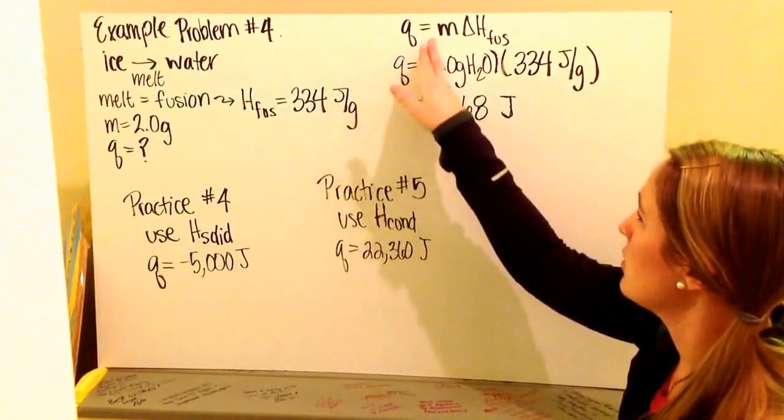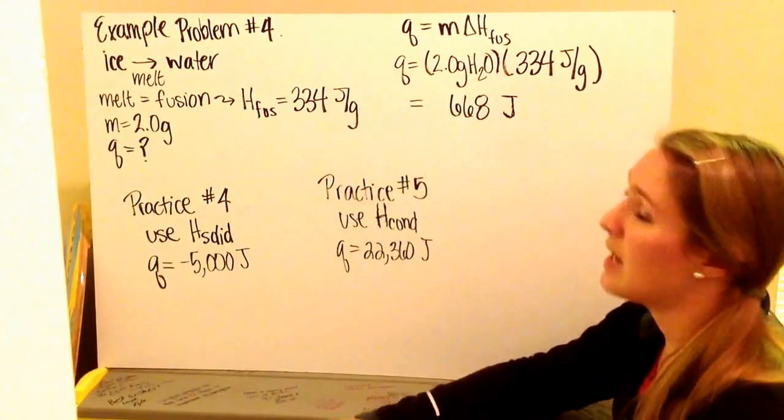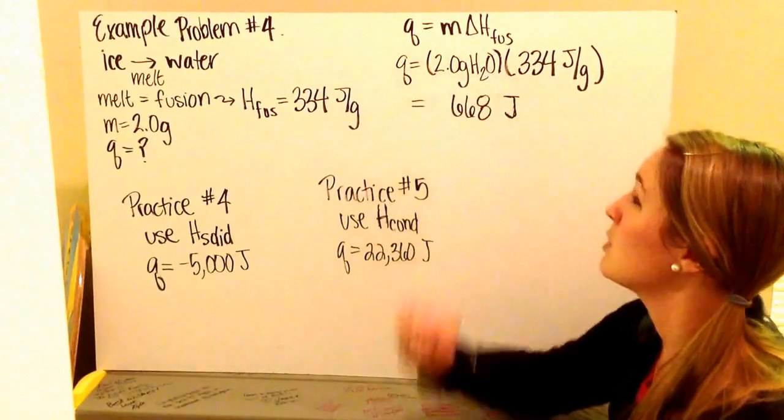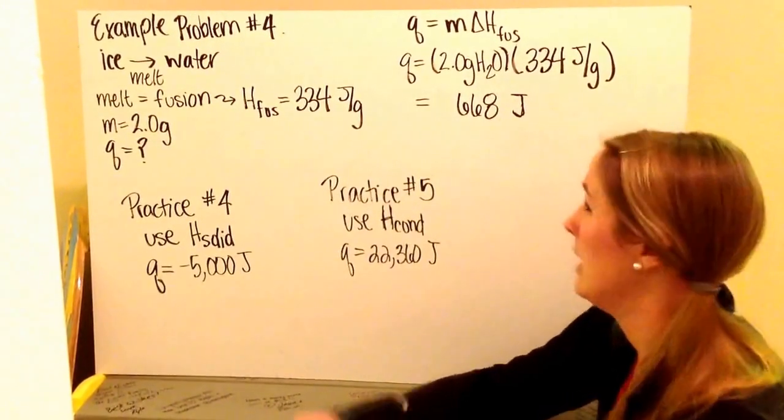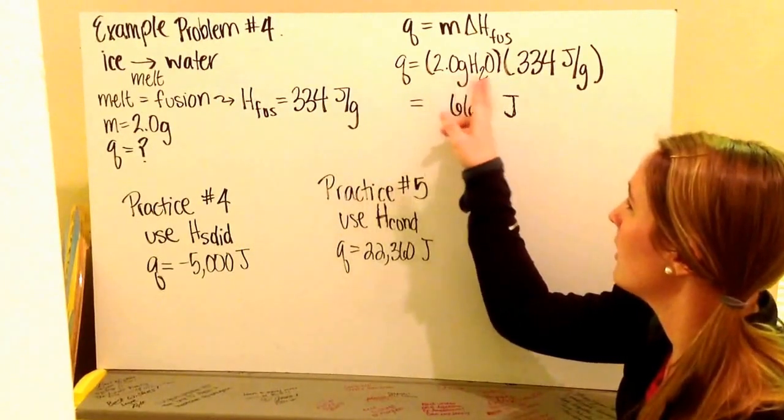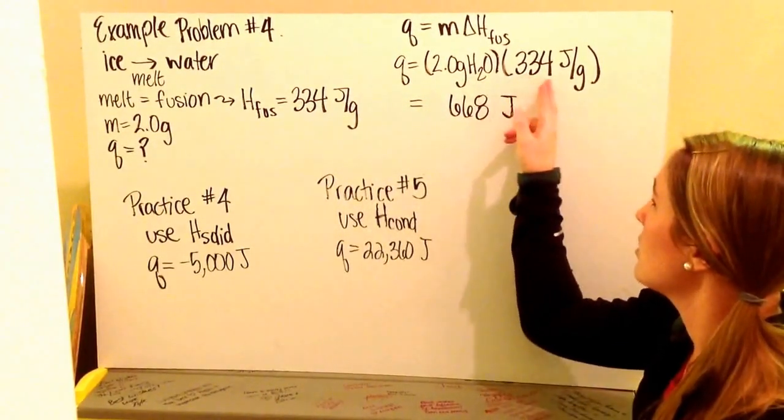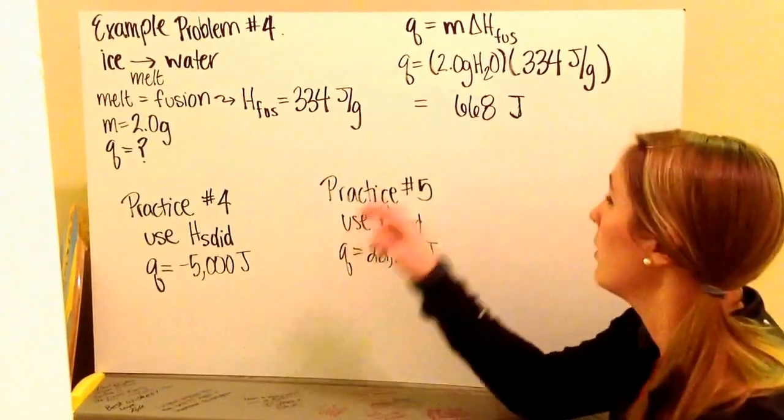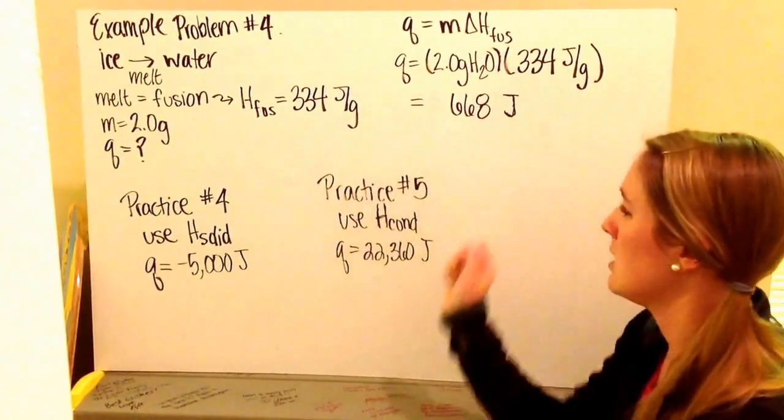I use my equation of Q equals M change in H, so my change in heat or my fusion. Sometimes you'll have the delta sign, sometimes you will not. My Q, my heat, is equal to 2.0 grams of water times 334 joules per gram. 2 times 334 is 668 joules.